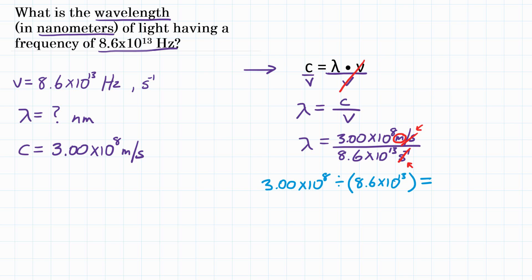and we get 3.48837 times 10 to the negative 6. Let's round that to two significant figures, and we get the wavelength is equal to 3.5 times 10 to the negative 6 meters. So we have the wavelength, but it's in meters, and we want nanometers. That's what the problem was asking for. So we need to do one last step, which would be a unit conversion.